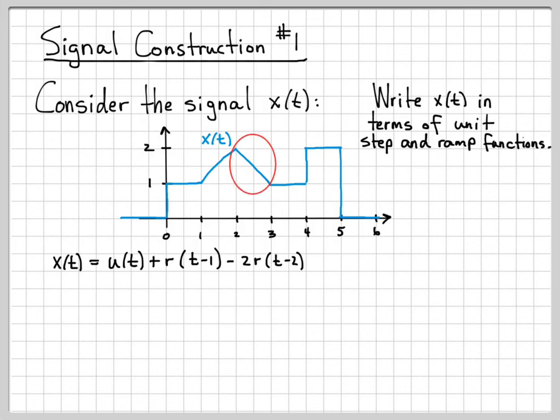That takes care of times two to three. At time three, we level off. So we had a slope of minus one. During this time interval, we have a slope of zero. So we went from minus one to zero, so that's a change of plus one slope. So at time three, I need to add in a ramp function to account for that change. So plus r(t-3). That takes care of times three to four.